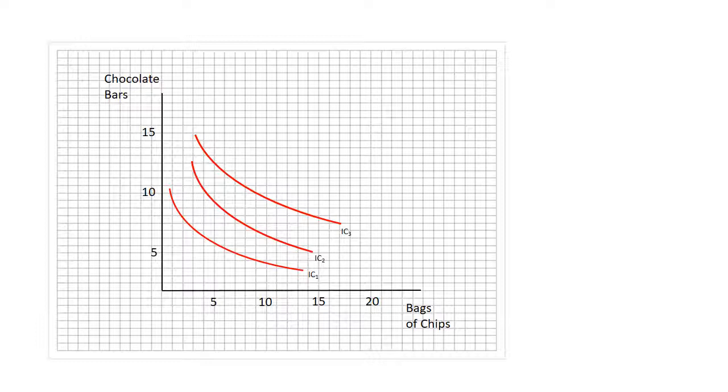What I wanted to do with this video is explain using another example the idea of the budget constraint and the idea of the income and substitution effect. Here we have an example of a person who is trying to decide how many bags of chips and how many chocolate bars to consume. We have three indifference curves here labeled one through three, where one is the lowest indifference curve and three is the highest.